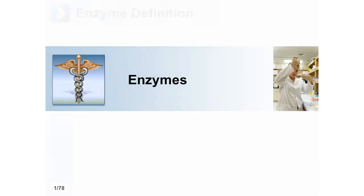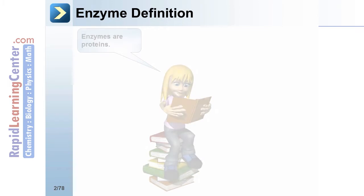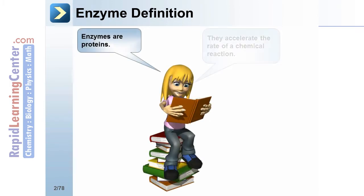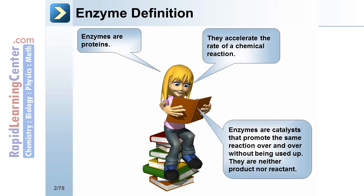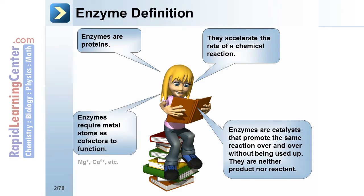Enzymes — enzyme definition. Enzymes are proteins that accelerate the rate of a chemical reaction. Enzymes are catalysts that promote the same reaction over and over without being used up in the reaction. They are neither product nor reactant. Enzymes require metal atoms as cofactors to function, such as magnesium and calcium.